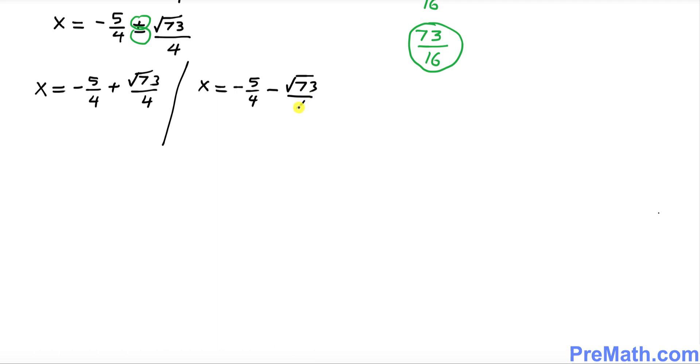Thus our solution set turns out to be {-5/4 + √73/4, -5/4 - √73/4}, and these are our answers. Thanks for watching. Please don't forget to subscribe to my channel for more exciting videos.